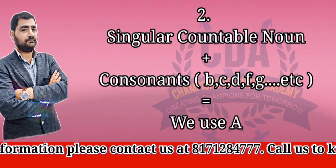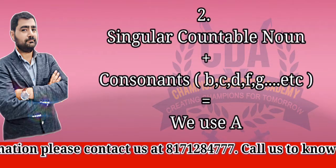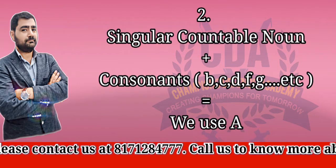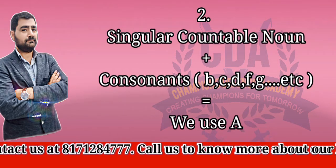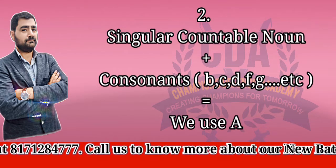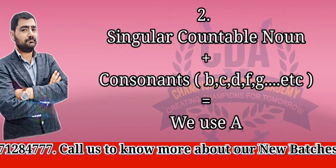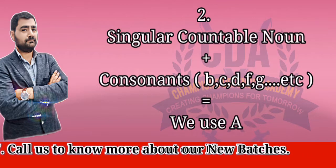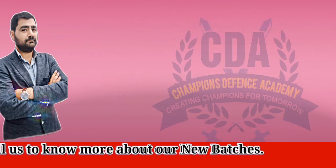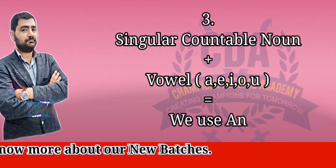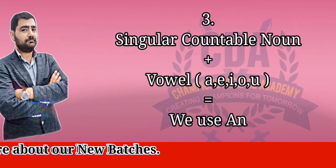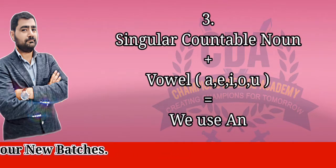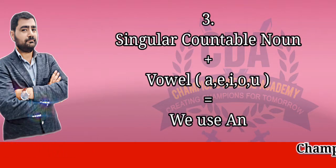The second rule is that if a word starts with a consonant like B, C, D, F, G, then we use 'a', as we have done in the examples above. The third rule is that if a word starts with a vowel, then we use 'an', just as we used 'an orange'.